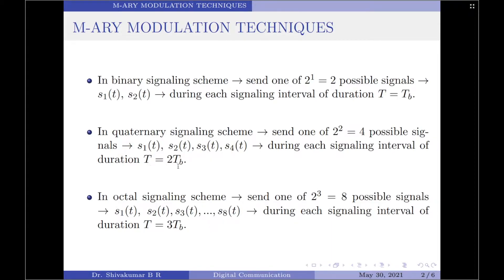In a very similar fashion, for the octal signaling scheme we will send 1 of 2^3 = 8 possible signals, denoted by s1(t) through s8(t). One of these 8 possible signals is transmitted during each signaling interval, which is given by T = 3·Tb. So in the octal signaling scheme, each symbol is of length 3 bits and therefore the symbol duration is 3 times the bit duration.